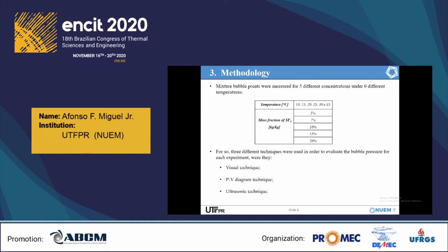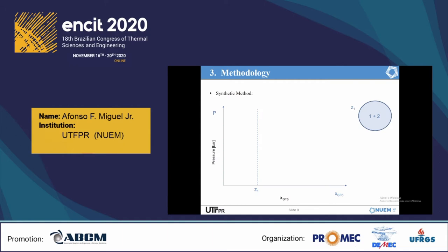Mixture bubble points were measured for 5 different concentrations, varying from 5 to 20% of SF6, and under 6 different temperatures, varying from 10 to 35 degrees Celsius. The synthetic method was the one selected for the experiments. It would start with the mixture preparation in its monophasic liquid form or, in case of partial miscibility of the mixture, two-phase liquid-liquid form at the predetermined temperature and pressure. Later on, the pressure would be dropped until the start of formation of a gaseous phase, which would indicate the bubble point of the mixture.